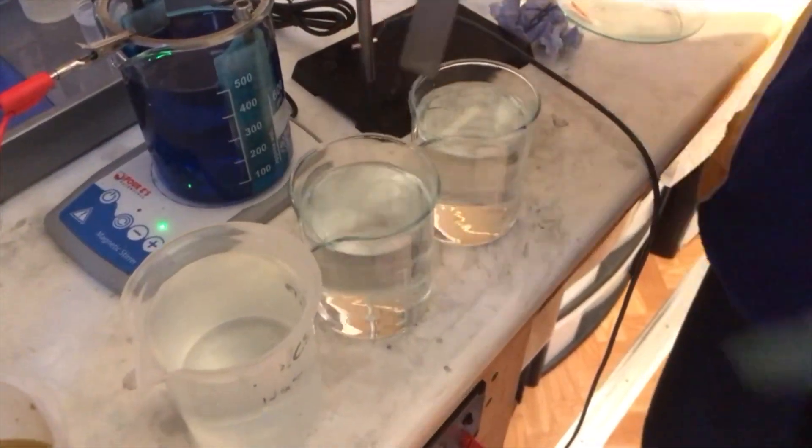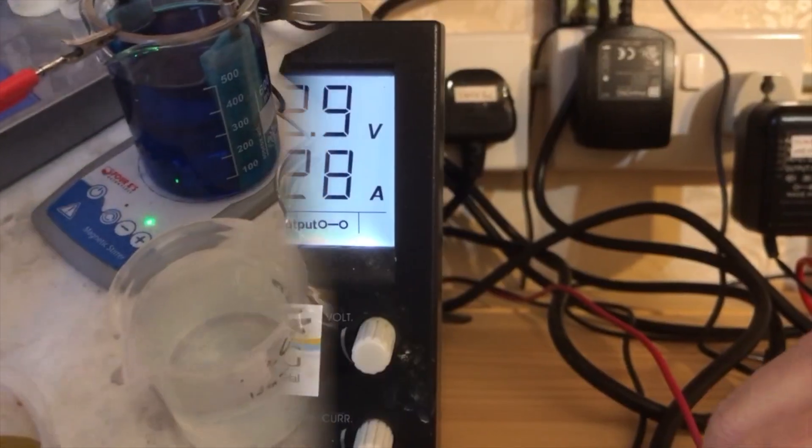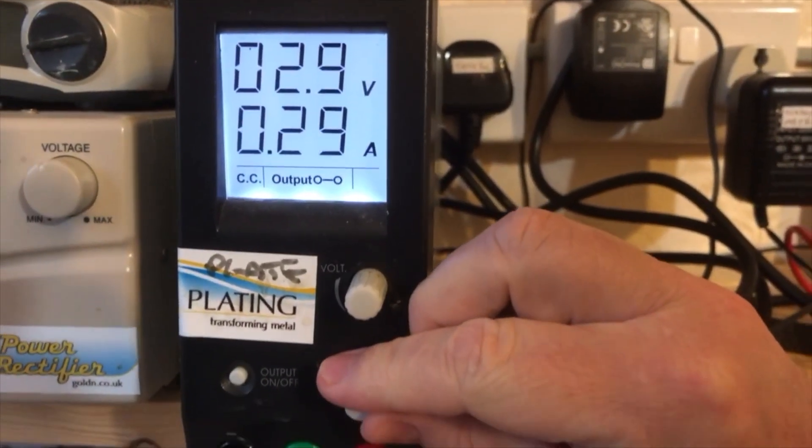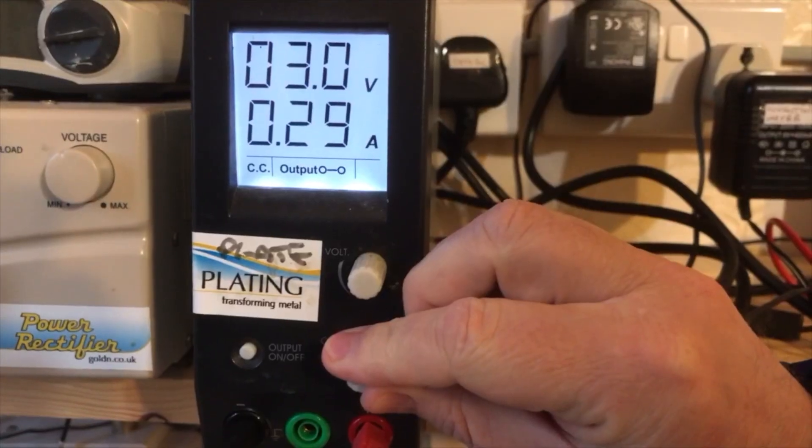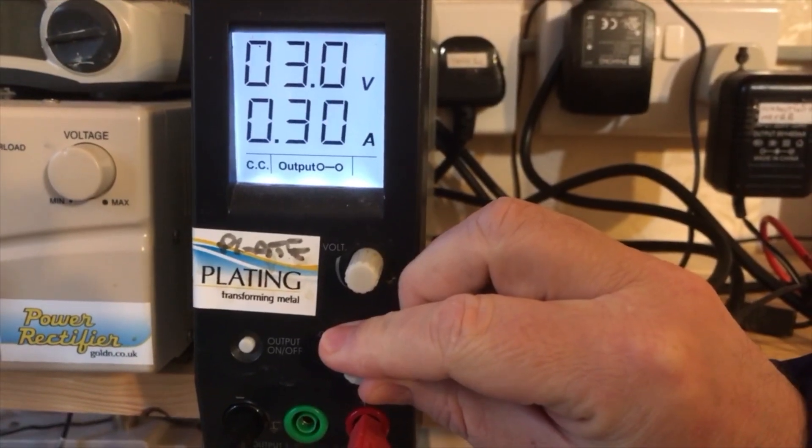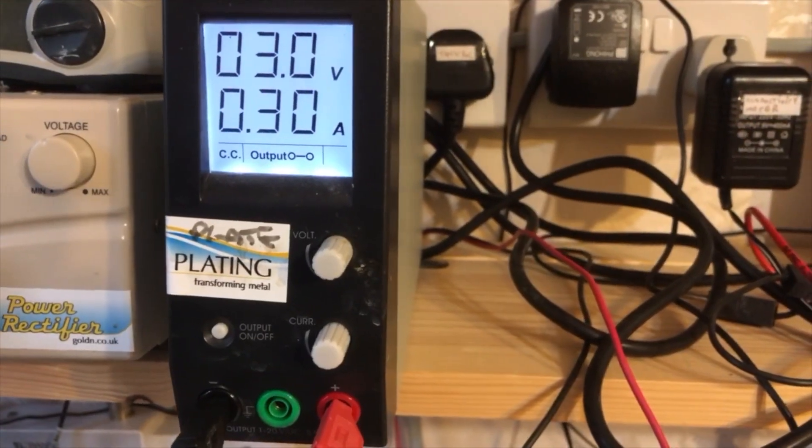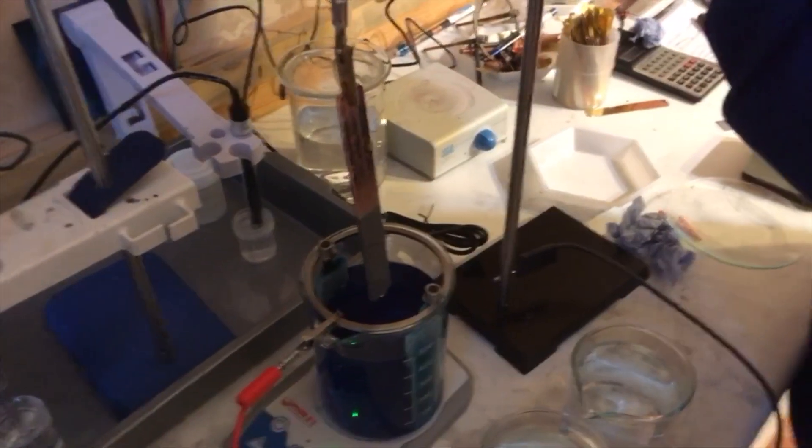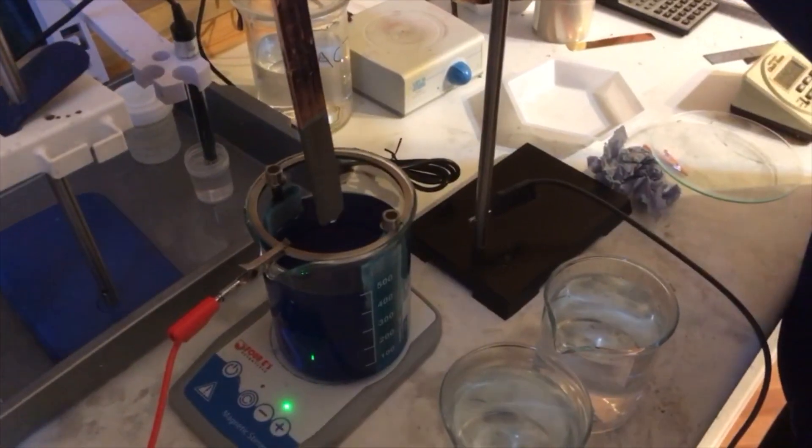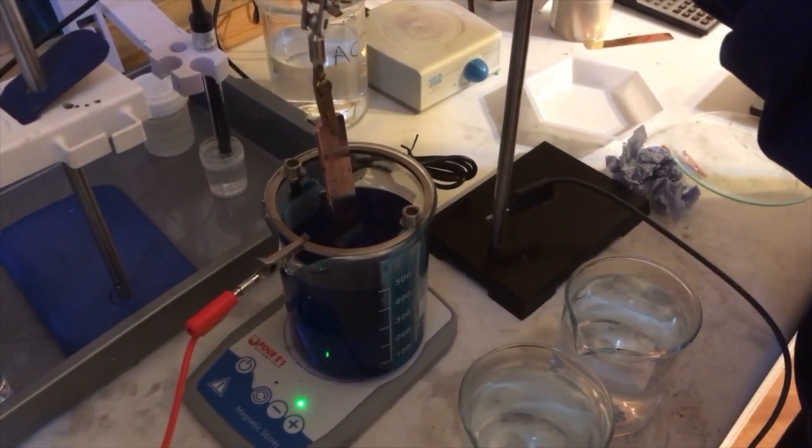Set the rectifier in this case to 0.3 of an amp - ignore the voltage - and make sure everything is on. Now the next stage: it's very important that you put the item in very quickly. Make sure the rectifier and everything is on.